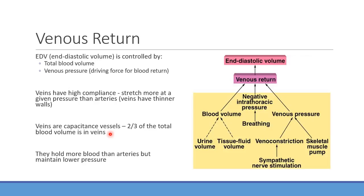Because the venous system is a low-flow, low-pressure system, blood can sludge up — for example, during a long plane flight with poor circulation, blood can stagnate and potentially clot, causing a deep venous thrombosis (DVT). The veins are a high-capacity system, and more blood in the venous system means more blood returning to the heart, increasing end-diastolic volume and preload.